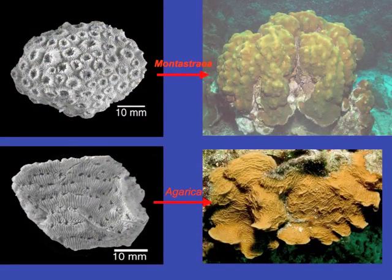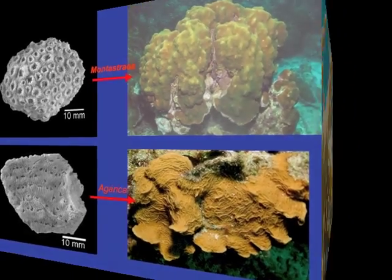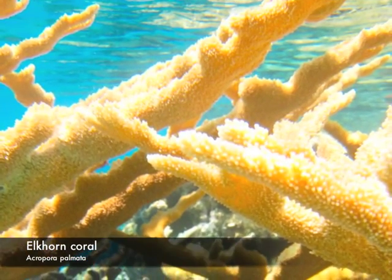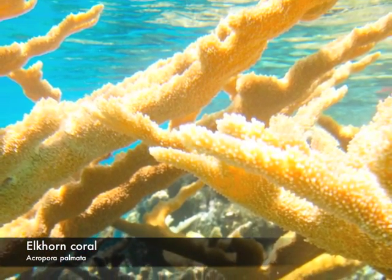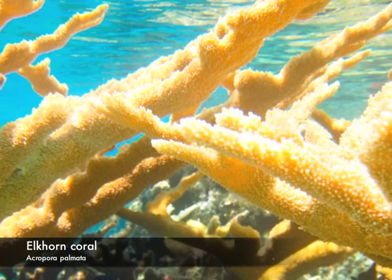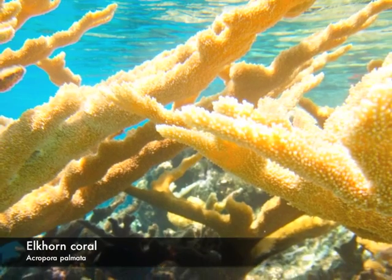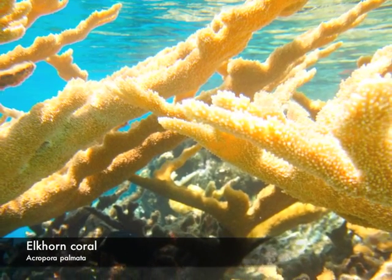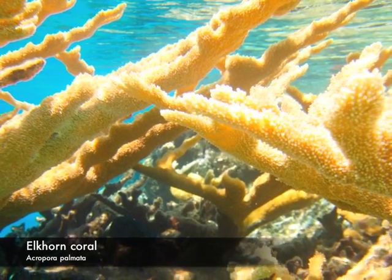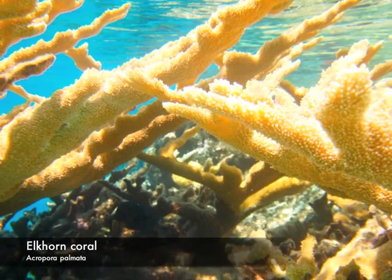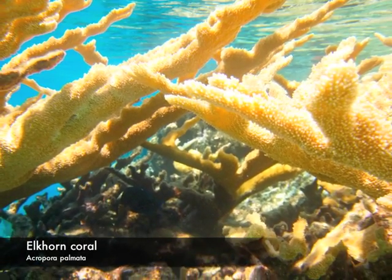Some of the same fossil corals in the Dominican Republic are alive today, indicating that some species can live for millions of years with few evolutionary changes. Other living corals, such as the Elkhorn coral, Acropora palmata, cannot be found in the rocks of the Cibao Valley, indicating that this coral species evolved more recently. Fossil corals tell us much about how and why ocean life evolves.